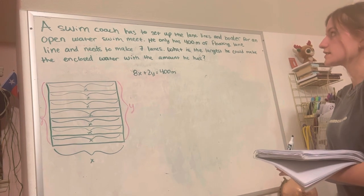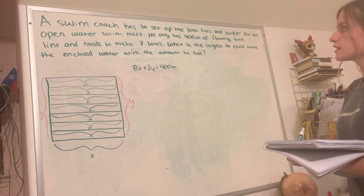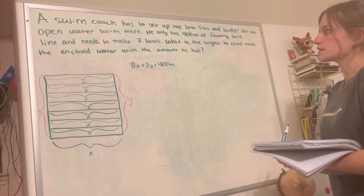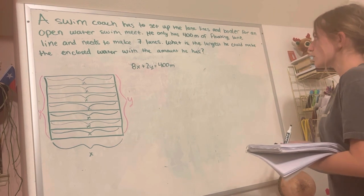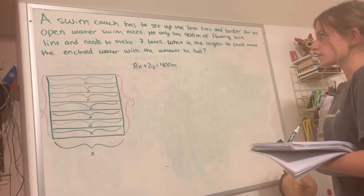A swim coach has to set up the lane lines and border for an open water swim meet. He only has 400 meters of floating lane line and needs to make seven lanes. What is the largest he can make the enclosed water with the amount he has?